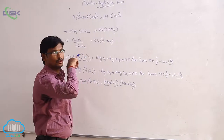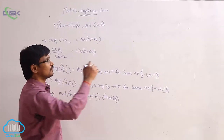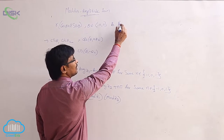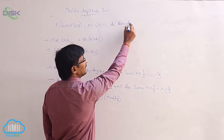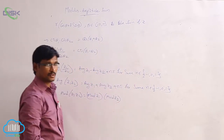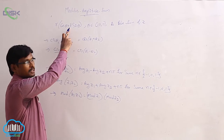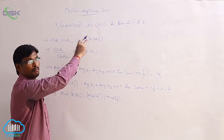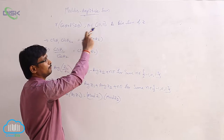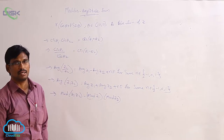The form r(cos θ + i sin θ) where θ is the argument, is called the modulus amplitude form or polar form of a complex number z.